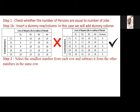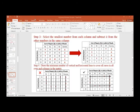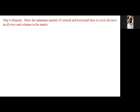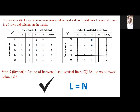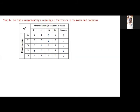After covering zeros, we get only 4 lines in the first attempt — not the optimum solution, so we cannot proceed to assignment yet. Select the smallest uncut number (1), subtract from uncut elements, and add at intersection points. In the second iteration, after applying the same procedure again with minimum value 3, we finally get 5 lines — equal to the number of rows, so we can proceed to assignment.